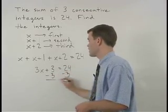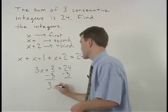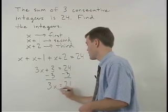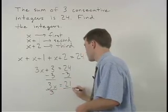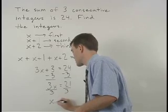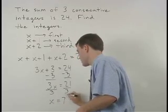Subtract 3 from both sides, and 3x equals 21. Divide both sides by 3, and x equals 7.